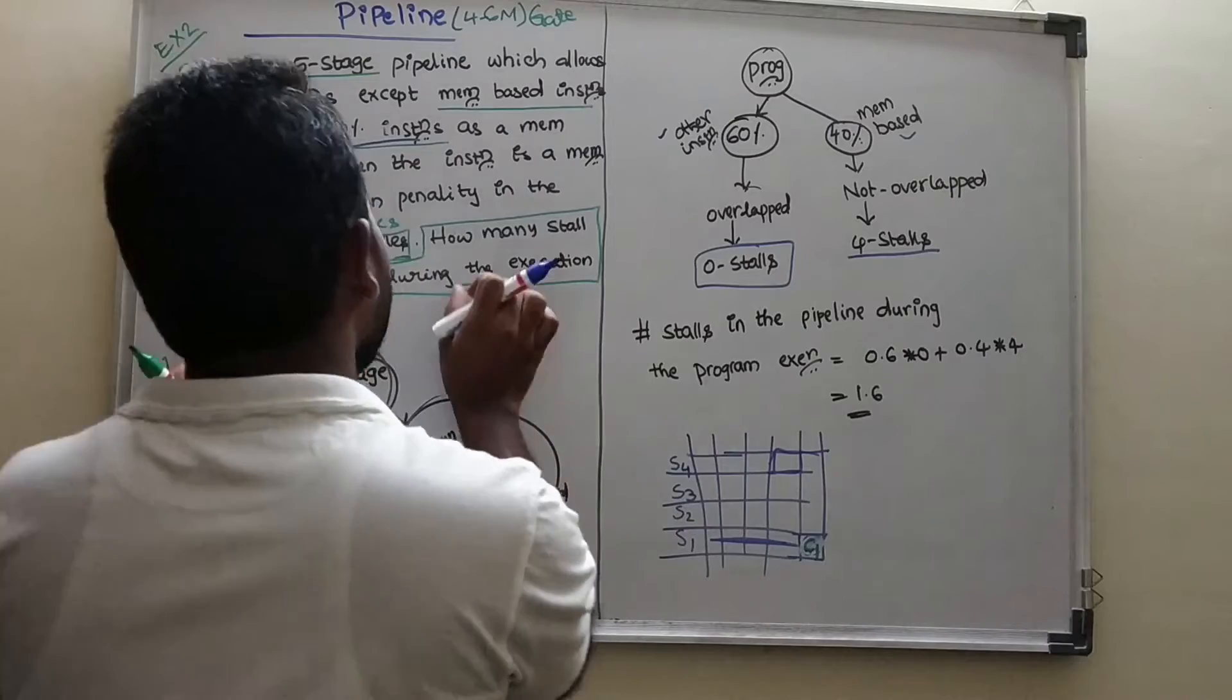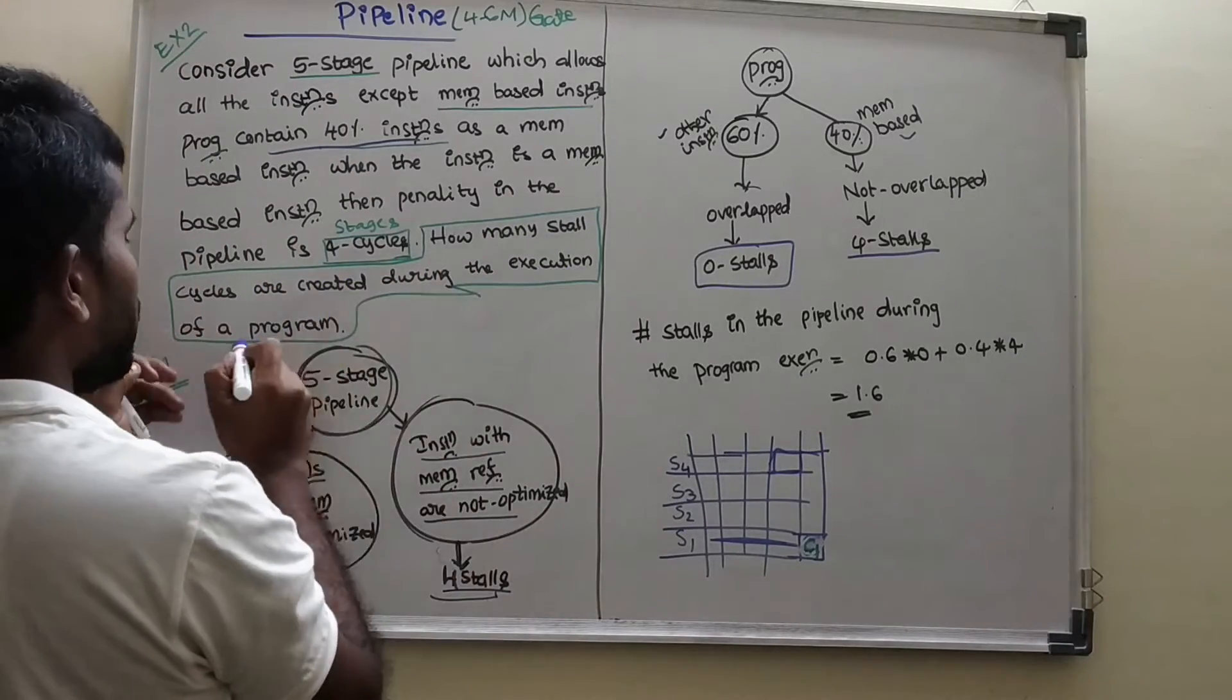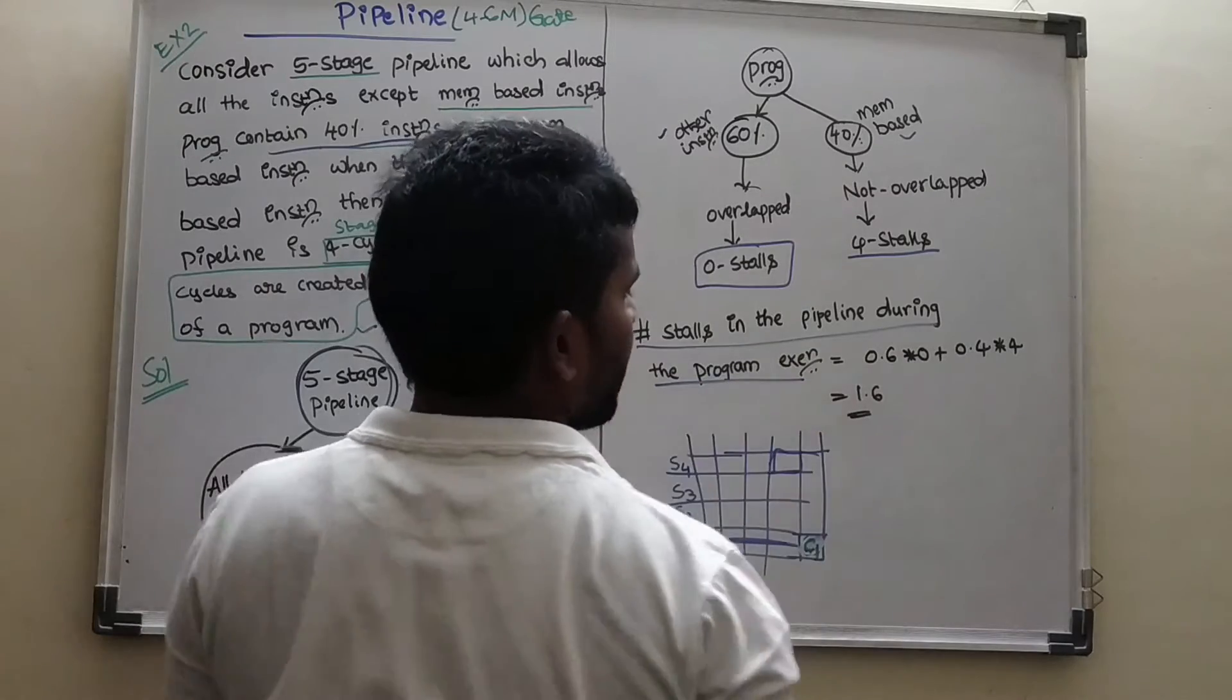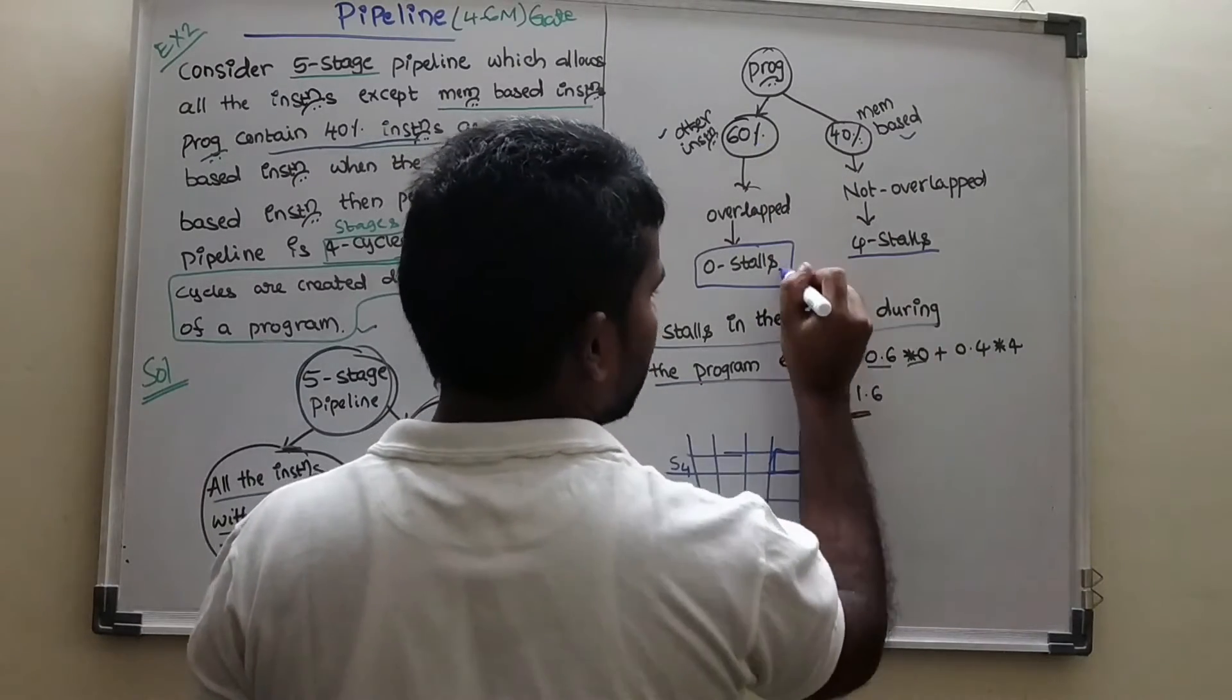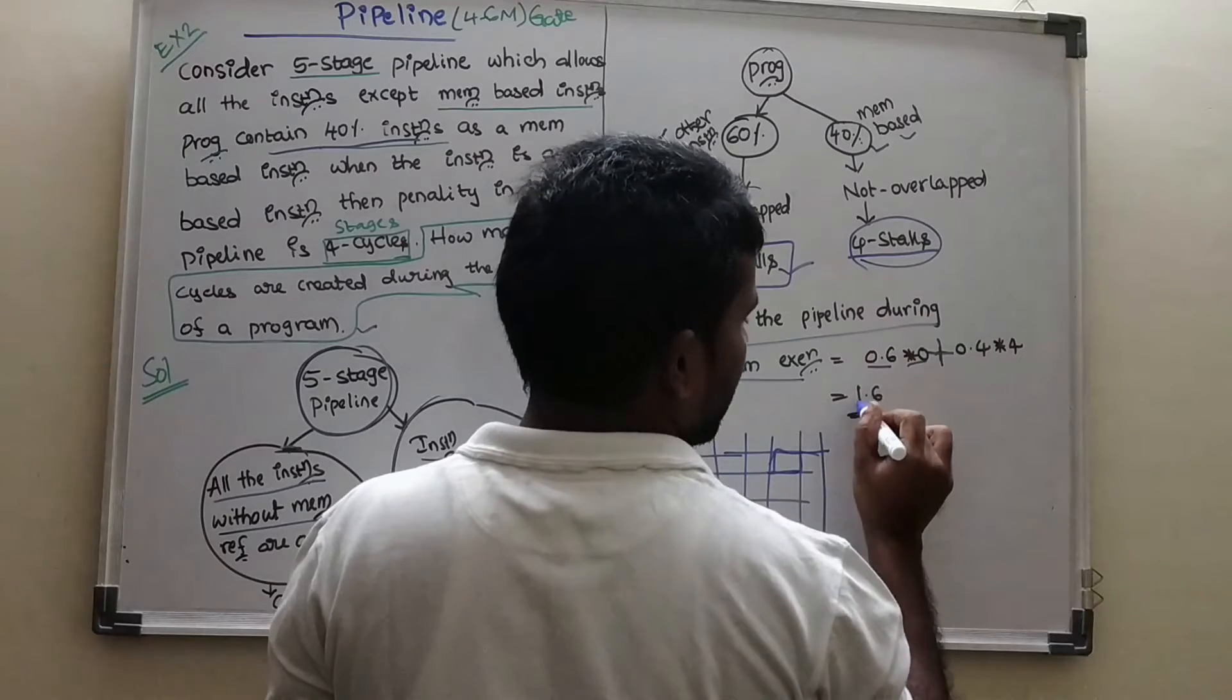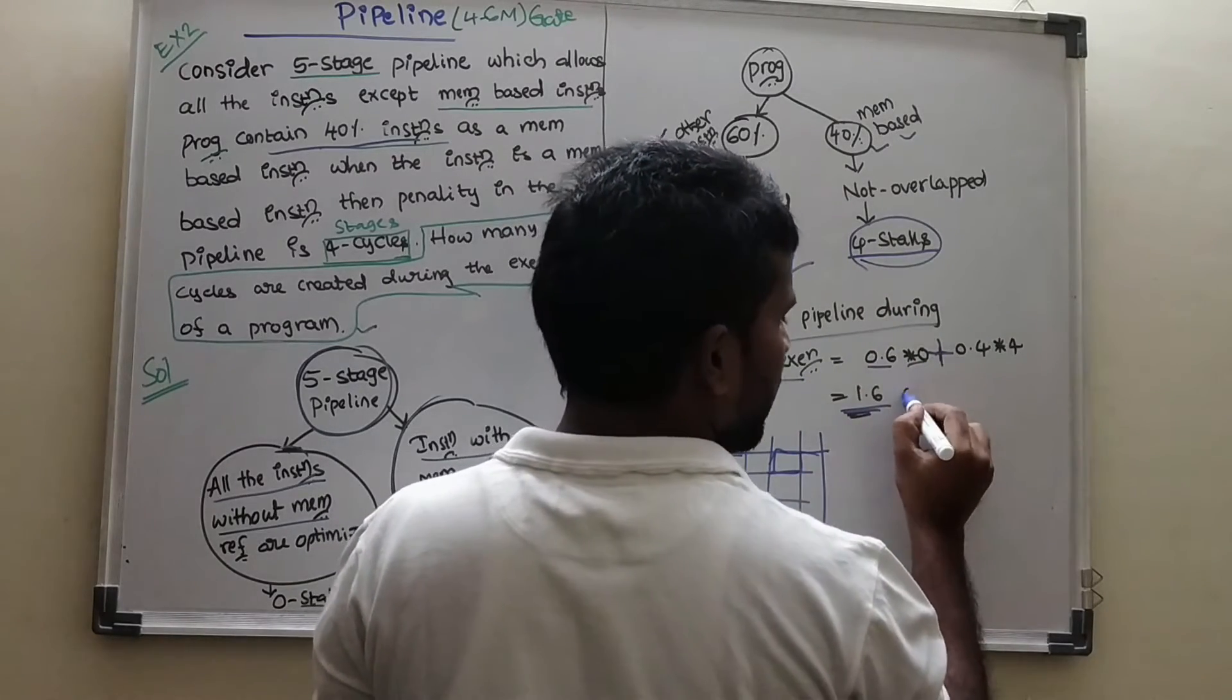You will take 4 cycles to do that. So our final model is how many stall cycles are created during the execution of the program. This is the work question. So what we need to find out? Stalls in the pipeline during the program execution. What is that? 0.6 into 0 stalls plus 0.4 into 4 stalls. It will give 1.6 as the cycles created during the pipeline.